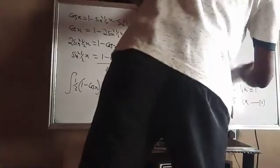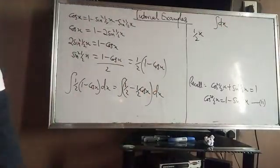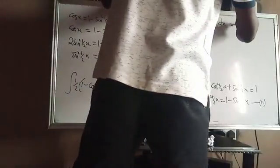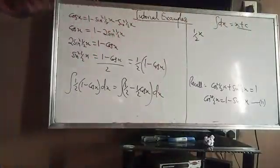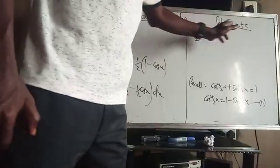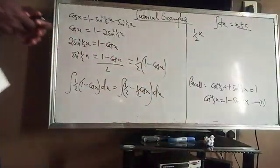Now I can integrate. Integrating the constant 1/2 with respect to x gives (1/2)x. Remember, if you integrate dx there is no numerical coefficient, so the answer is x plus c. If you had 2 dx it would be 2x plus c, and 3 dx gives 3x plus c.